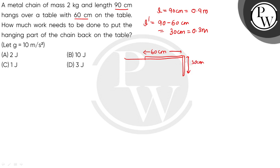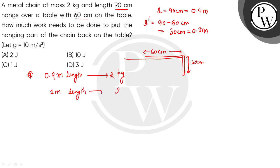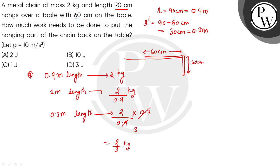We need to find how much work is done to put the hanging part back on the table. The total chain was 2 kg with length 0.9 m. For 1 m length the mass would be 2/0.9 kg. So for 0.3 m length of the hanging part, the mass would be (2/0.9) × 0.3.